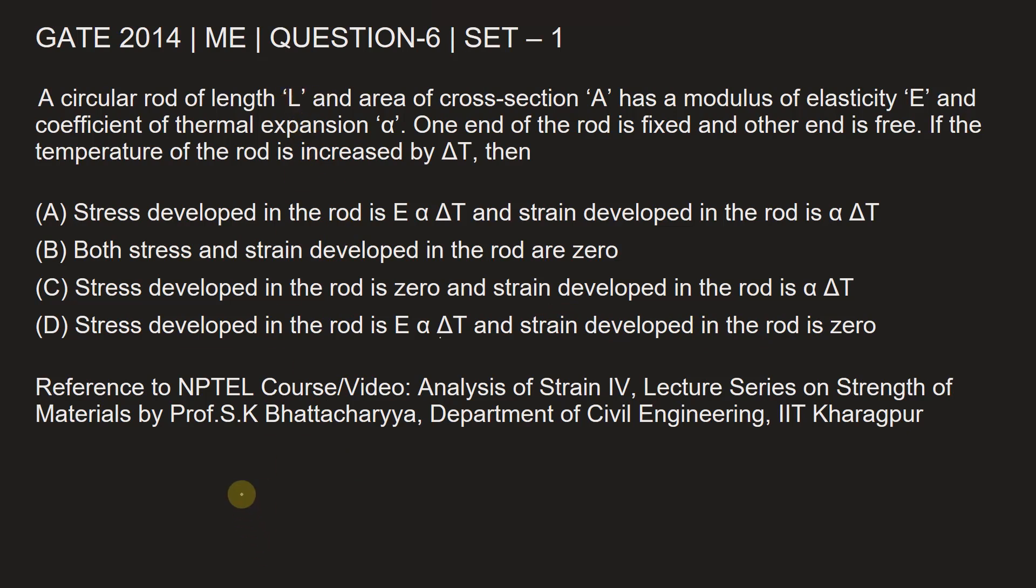The geometrical properties are given for the rod: length is L, cross sectional area is A. The material properties are given, the material with which the rod is made: modulus of elasticity is E and coefficient of thermal expansion is alpha. Though the values are not given, they are being mentioned here.